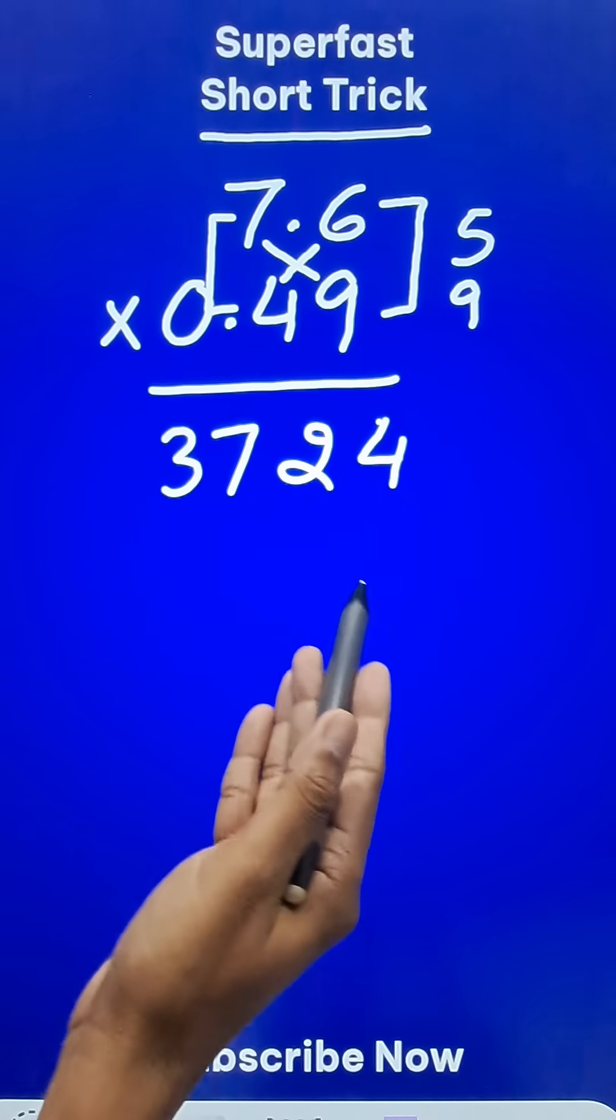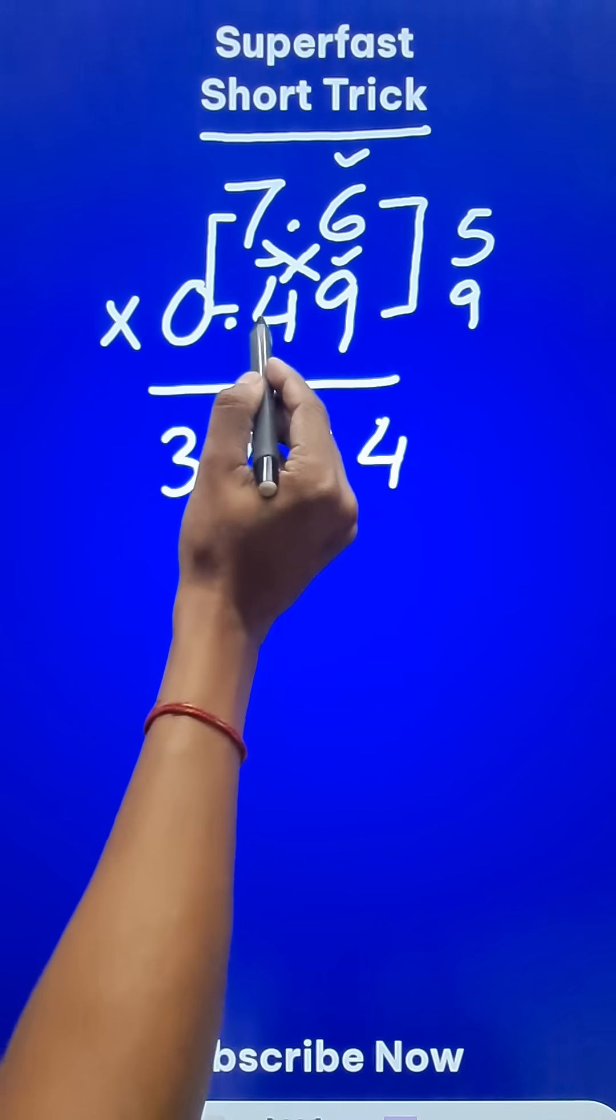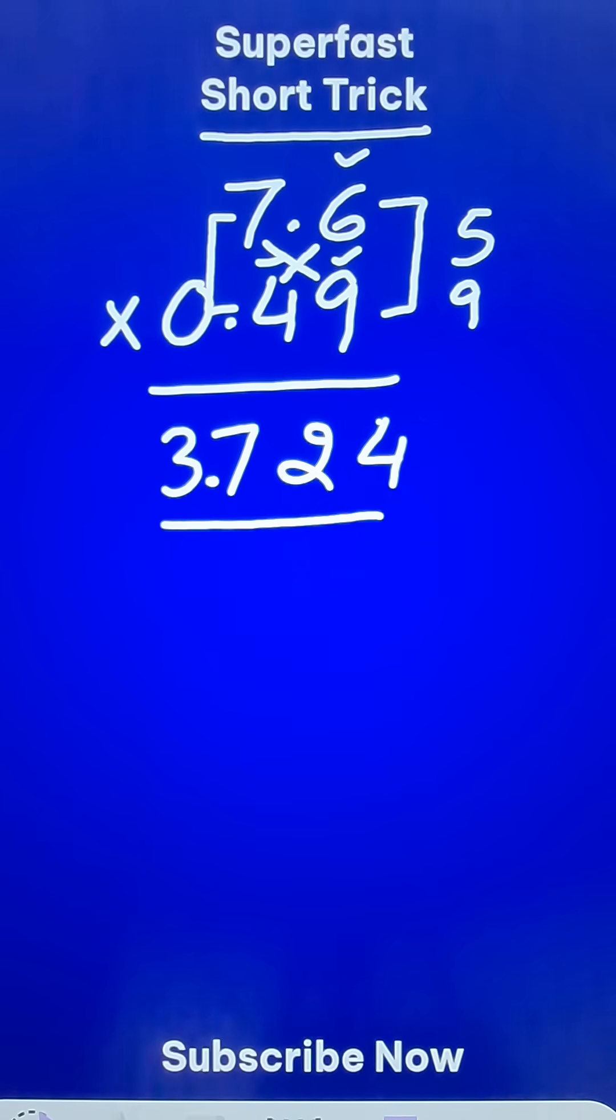Now it's all about putting the decimal at the right place. One decimal place here and 2 here makes it 3 decimal places. So 1, 2, 3 and the answer for the question is 3.724.